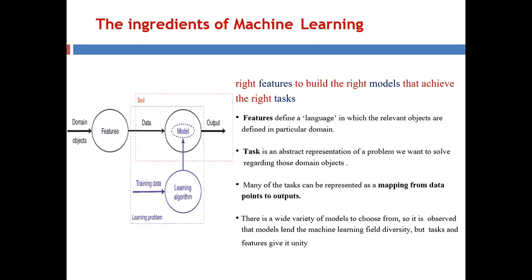The task and features give the field unity. Regardless of whether you are using a probabilistic, geometrical, or logical machine learning model, tasks and features are always used across all types of models. That makes machine learning unified even though the field is diverse because of different types of models being used.